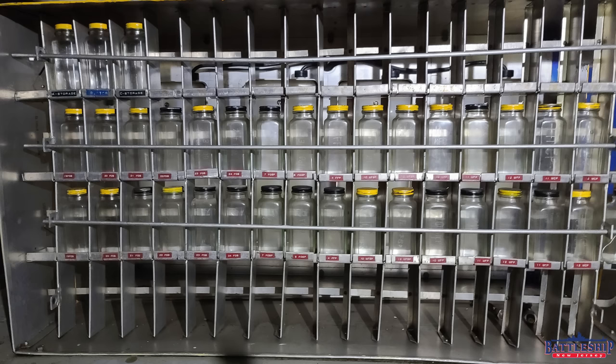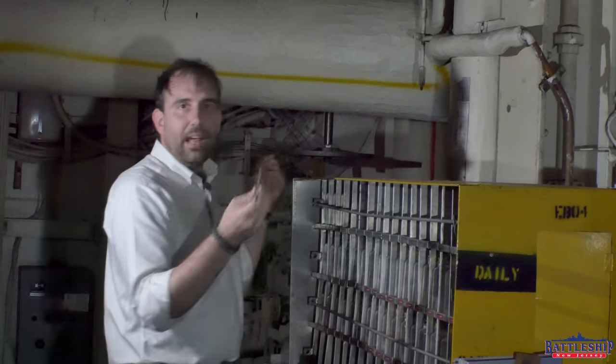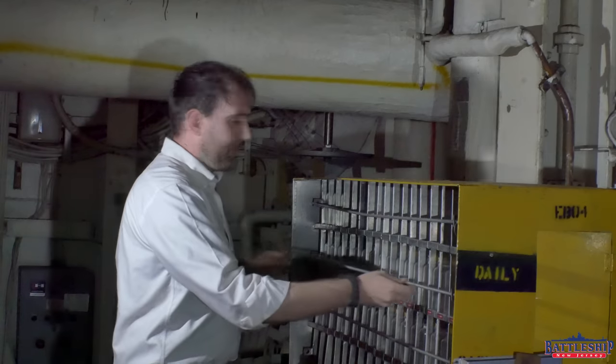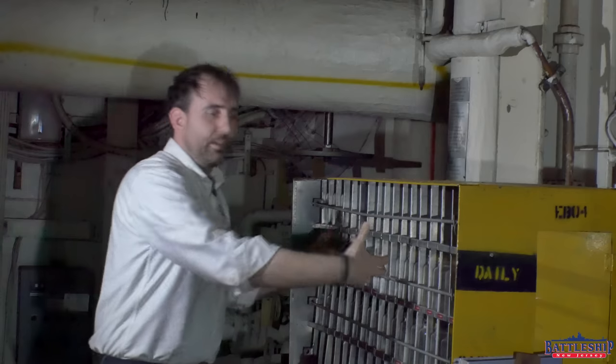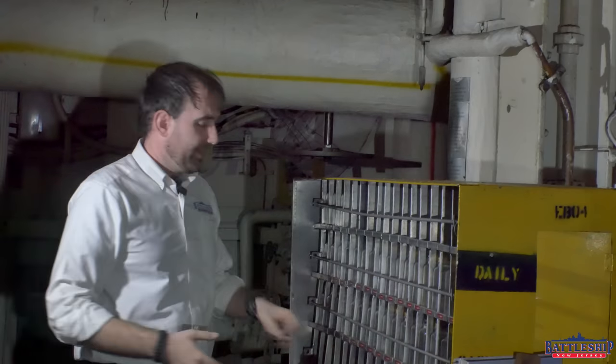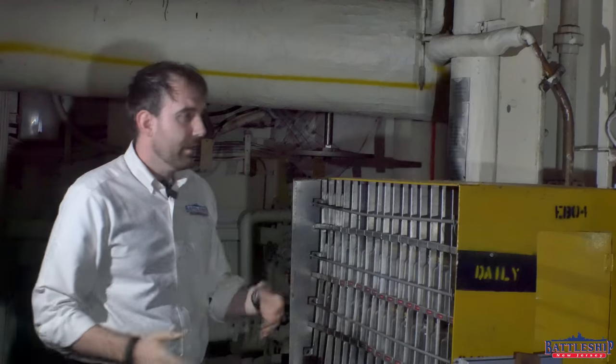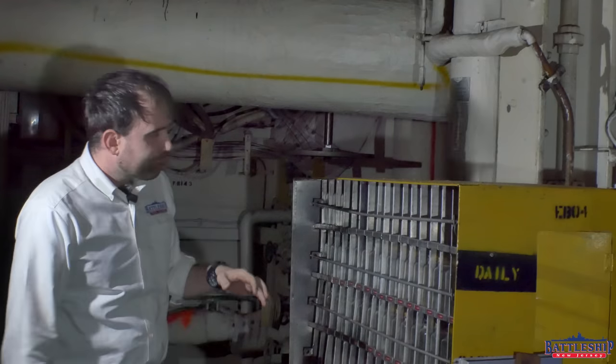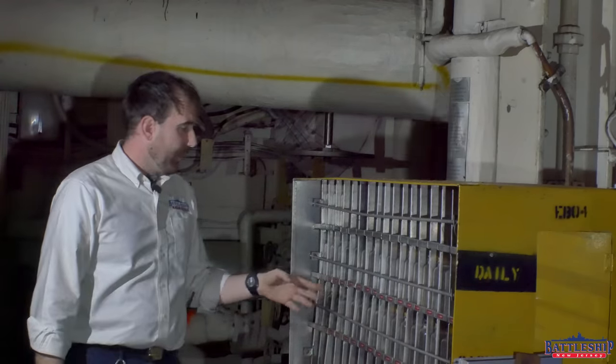So you notice that each one of these shelves has a pipe in front of it, so that as the ship is rocking and rolling, these glass bottles aren't just going to come out and spill on the deck and then you've got slippery oil all over the place, flammable oil, all sorts of problems.